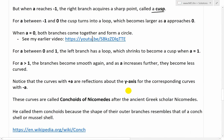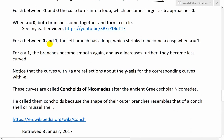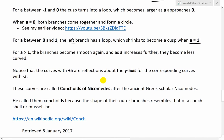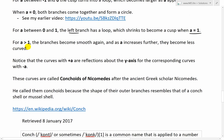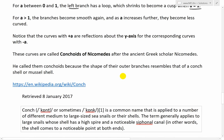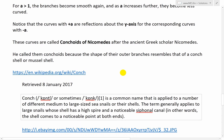And now what we end up happening on the right side is exactly the same as the left, it's just a mirror image. So for a between 0 and 1, the left branch has a loop which shrinks to become a cusp. So this one's on the left side now. When a equals 1, it shrinks to become a cusp. And then for a is greater than 1, the branches become smooth again. And as a increases further, they become less curved.